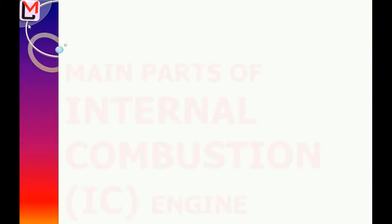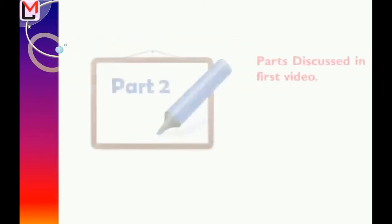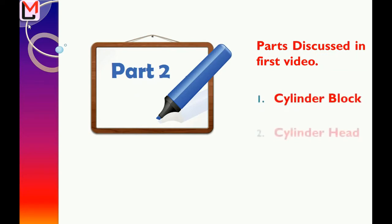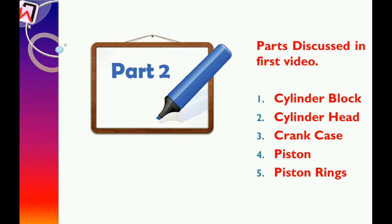Hi everyone, welcome to CAD Mania. This is the second video on internal combustion engine components. In the first video we learned about the following parts: cylinder block, cylinder head, crankcase, piston, and piston rings. If you have not watched the first video, please watch it — the link is given in the description.